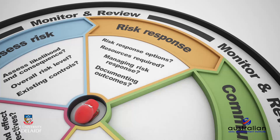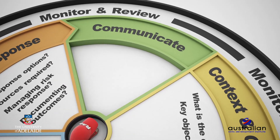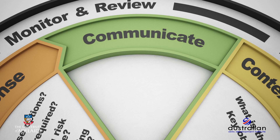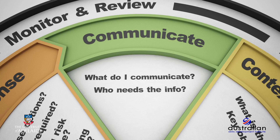The next step, and arguably the most important step throughout the risk management process, is communicating. Communicating the identified risks and responses to your team and stakeholders underpins the successful management of the risk management process. Communication needs to occur regularly, openly, and formally, to ensure that all stakeholders are aware of the risks and planned responses. Open and honest communication further allows for all stakeholders to be involved in the risk management process and offer input where necessary. Key questions include: what do I need to communicate? To whom do I need to communicate? And what strategies can I use to communicate?